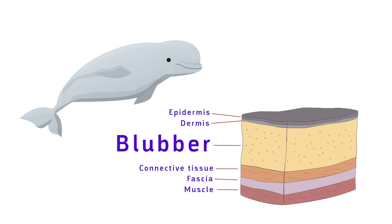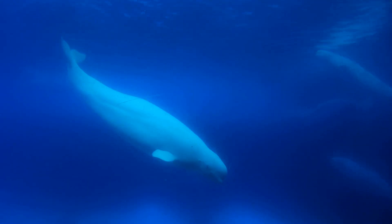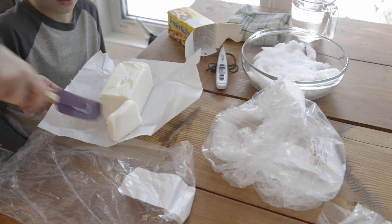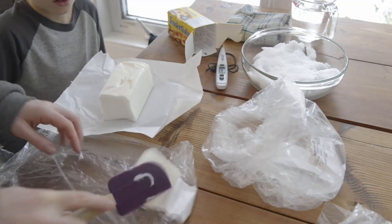The blubber keeps them warm and also stores nutrients in their body so that they can use them when they are in environments where there isn't much food. The fat molecules in the Vaseline or shortening that we used act a little like blubber to give us an understanding of how it works.